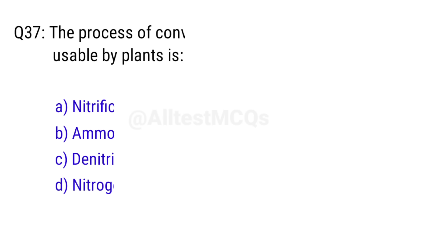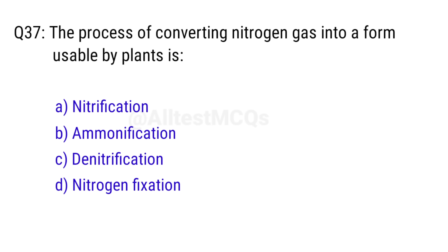Q37. The process of converting nitrogen gas into a form usable by plants is? Right answer is option D, nitrogen fixation.